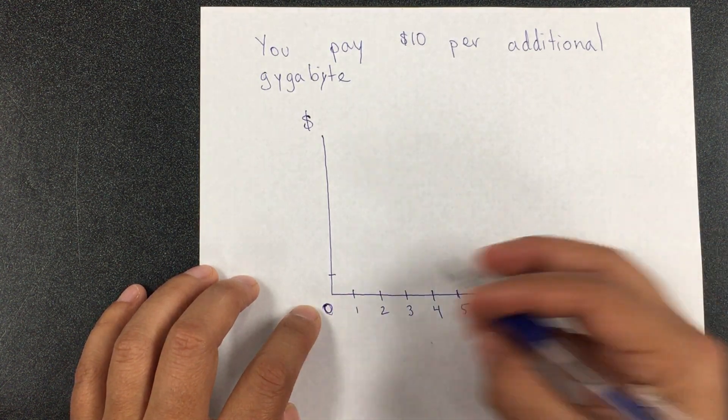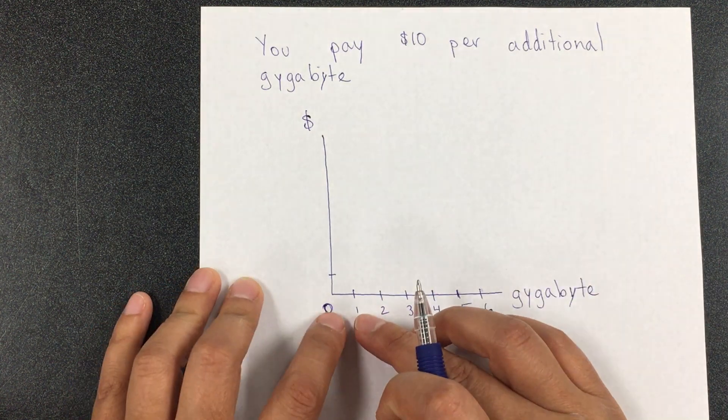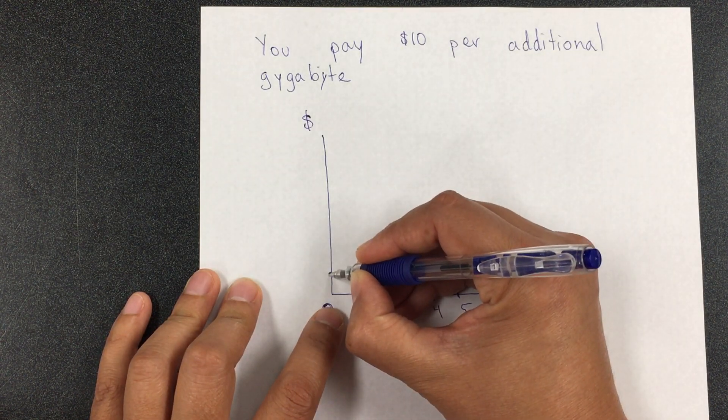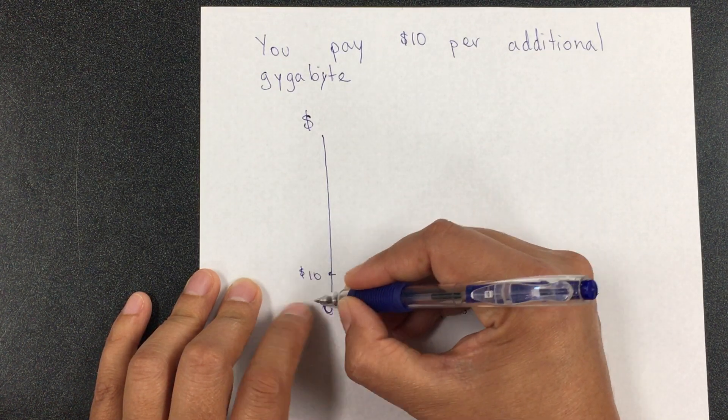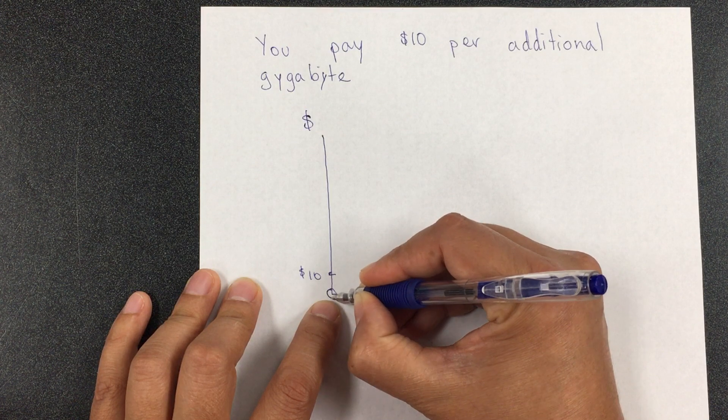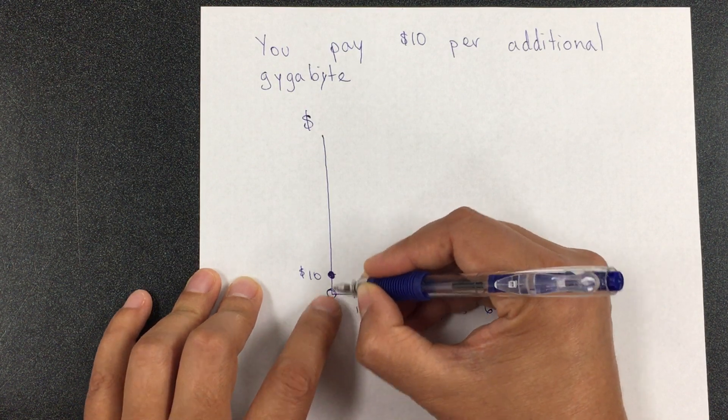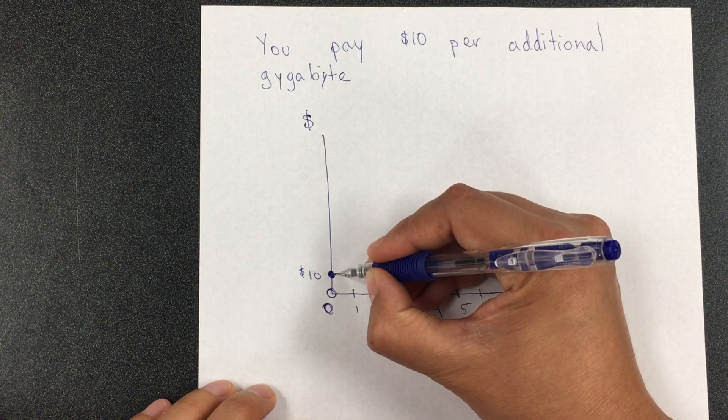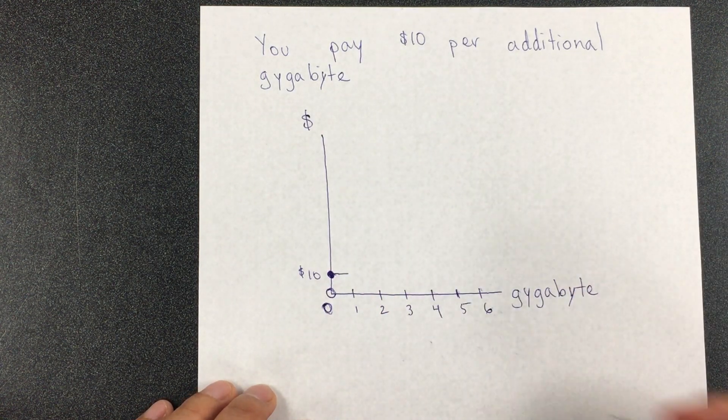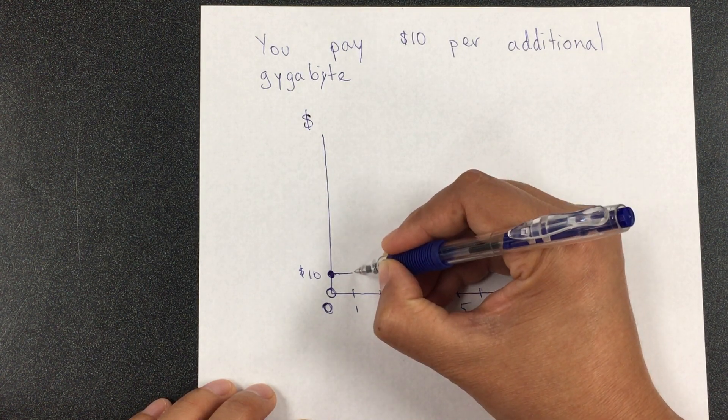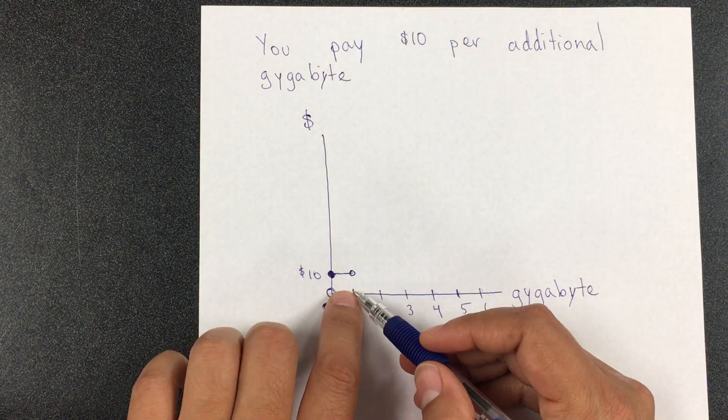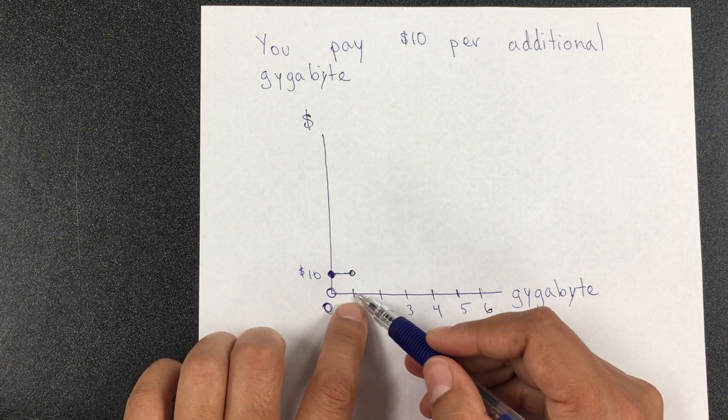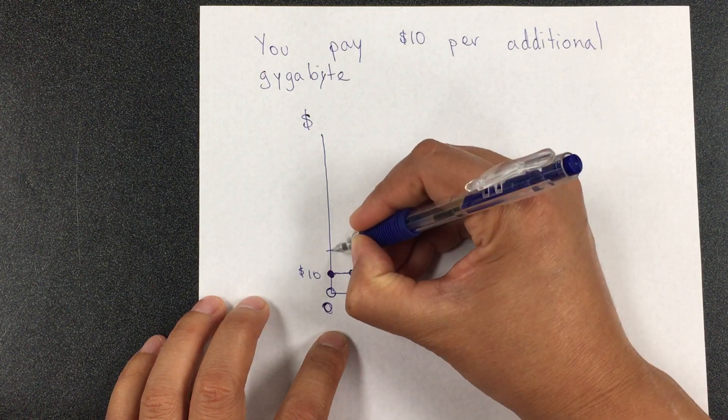Then if I'm going to start using some of the data, so 0.5, I already have to pay $10. I end up with that, so this will be open, and then I close it here, meaning that I pay starting here. I start paying for the additional gigabyte. This will be open, and then I pay starting right here, to add another gigabyte. As soon as I go beyond that, I paid an additional $10, so that's $20.